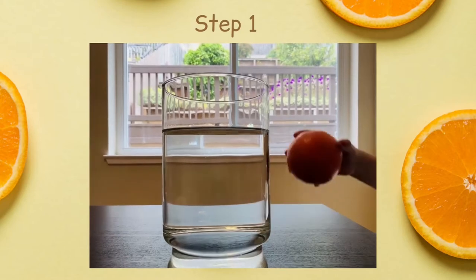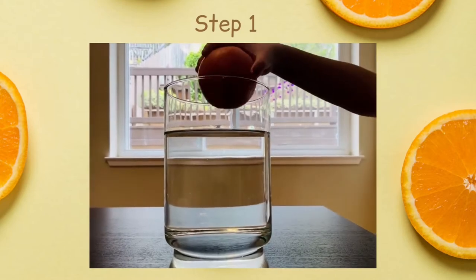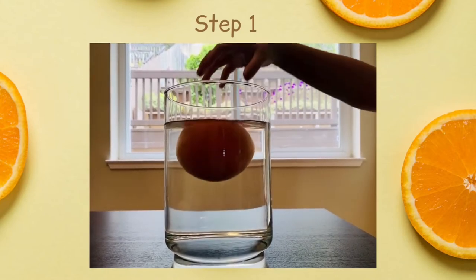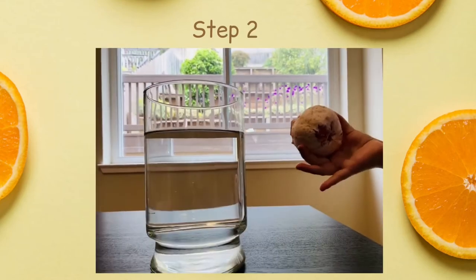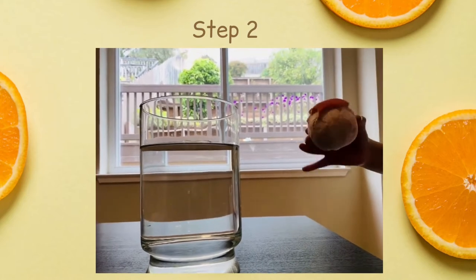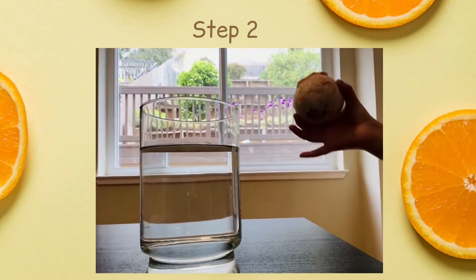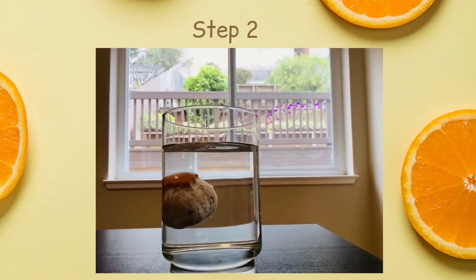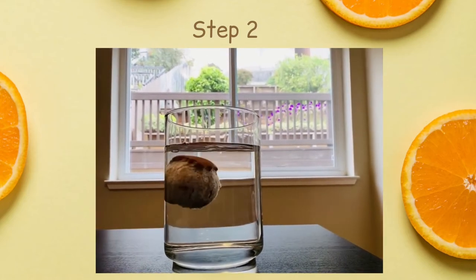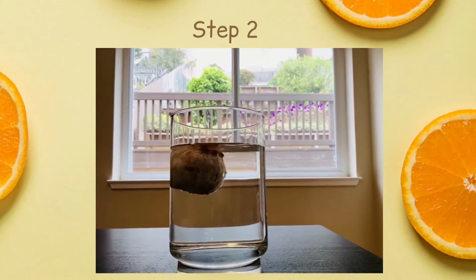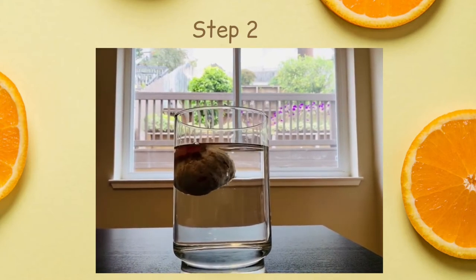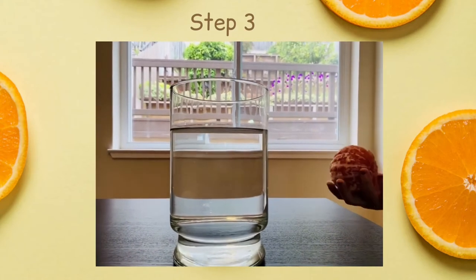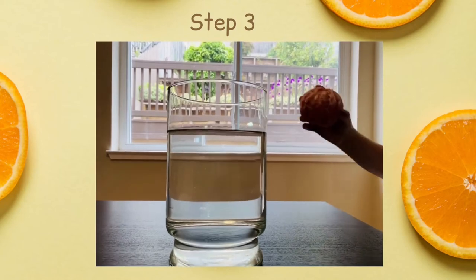First, place the grapefruit gently on the surface of the water. It floats. Now, peel off all the skin except for the part on the top of the grapefruit. It still floats. Lastly, peel off all the skin and again place the grapefruit in the water. It sinks this time.